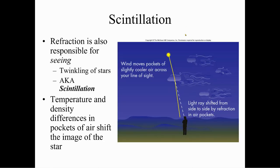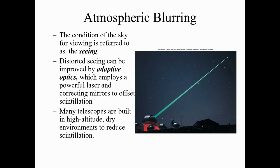We also have scintillation. When you look up at a star and see it twinkling in the night sky, that's scintillation. Refraction is responsible for the twinkling of stars — temperature and density differences in pockets of air shift the image of the star slightly, causing it to twinkle. Distorted seeing can be improved by adaptive optics, which employs a powerful laser and correcting mirrors to offset scintillation. Many telescopes are built in high-altitude, dry environments to reduce this — they shoot a laser beam at a star and all the mirrors focus on it to cut back on scintillation.